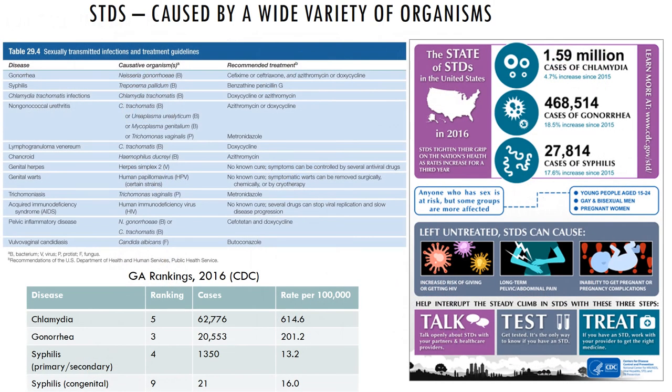There are a number of STDs that can be caused by a wide variety of organisms. The latest estimates on STDs can be found at the Centers for Disease Control and Prevention website, which gives the rankings of STDs by state, including rankings in Georgia, current estimates, rates per 100,000, and number of cases.